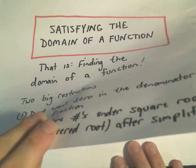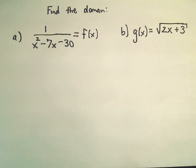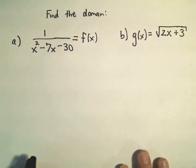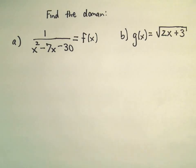So, two questions. Let's find the domain of these two: 1 over x squared minus 7x minus 30, and then b, we've got the square root of 2x plus 3.